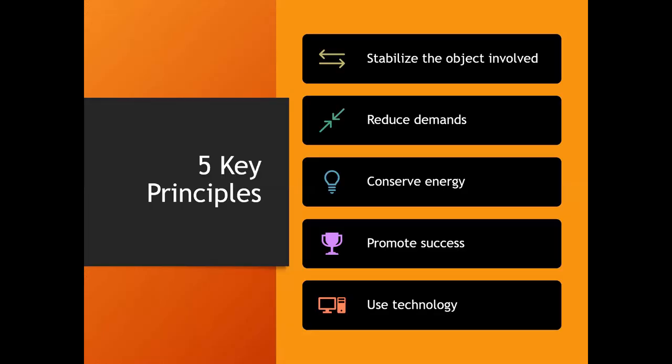So we're going to talk about how can we make a task easier to do. Really there are five key principles. Depending on what's going on, things to always consider in making a task easier is: are there ways to stabilize the object involved? How can we reduce the demand of the task? How can we conserve some of the energy? And when I say energy, more of muscle energy. What are ways we can promote success and are there ways that we can use technology to our advantage? I'm going to go into a little bit more detail on each of these.